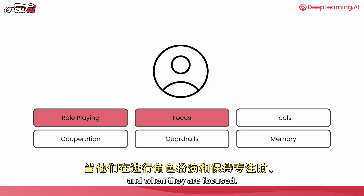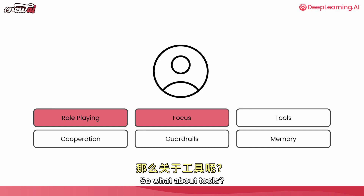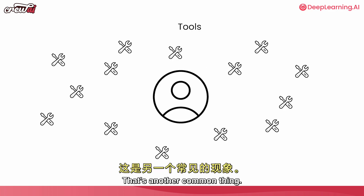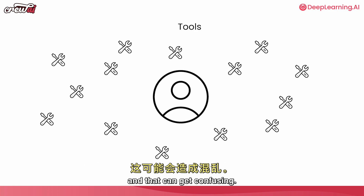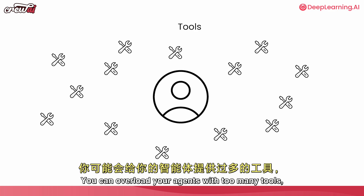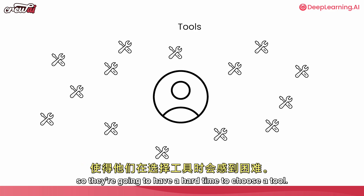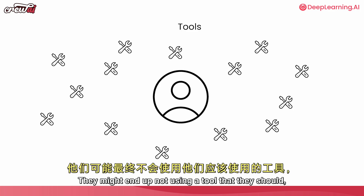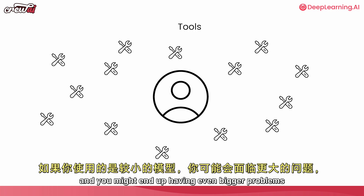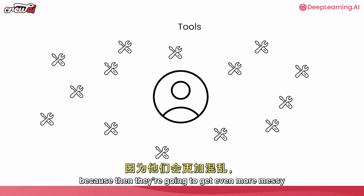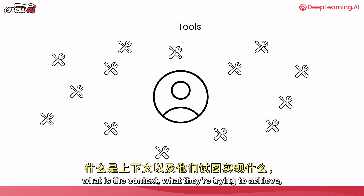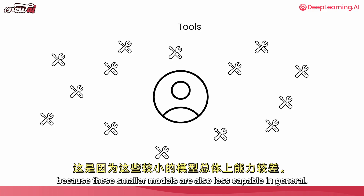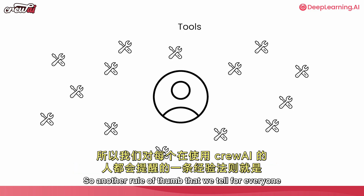Now let's talk about tools. That's another common thing — people tend to try to give a lot of tools to their agents, and that can get confusing. You can overload your agents with too many tools, so they'll have a hard time choosing. They might end up not using a tool they should, and you might have even bigger problems if you're using smaller models, because they'll get even more confused — unable to distinguish what is the tool, what is the context, and what they're trying to achieve.